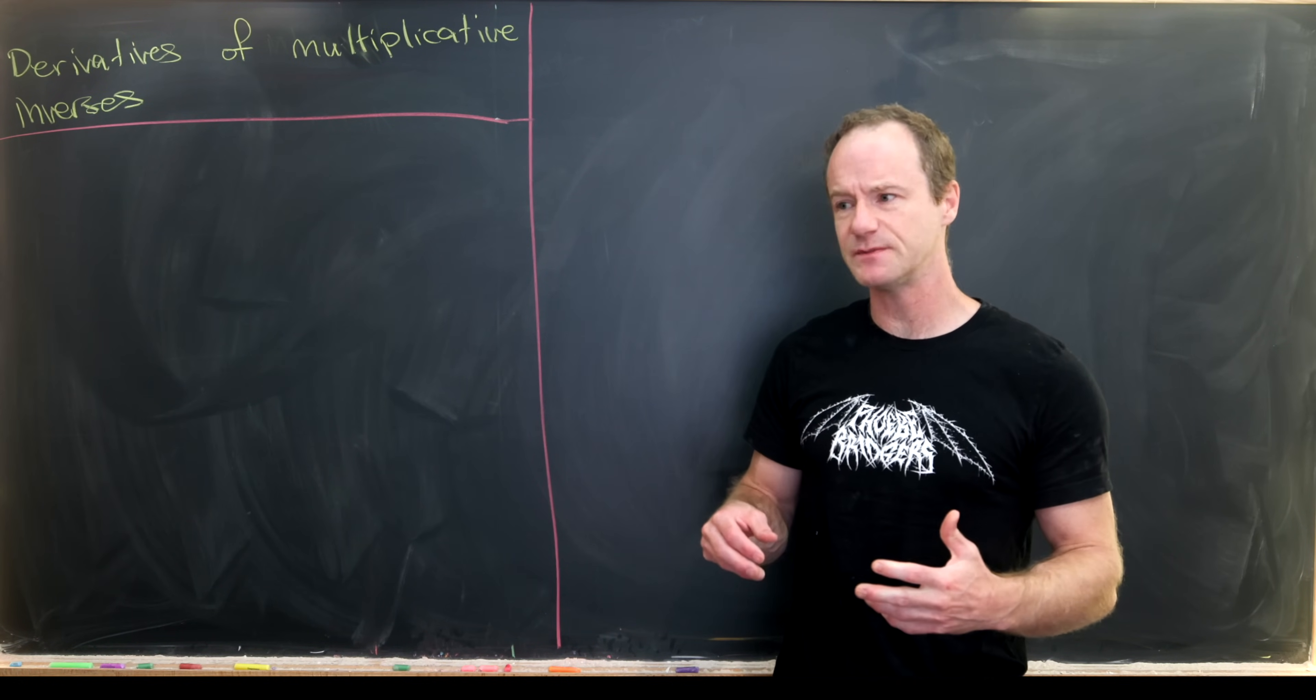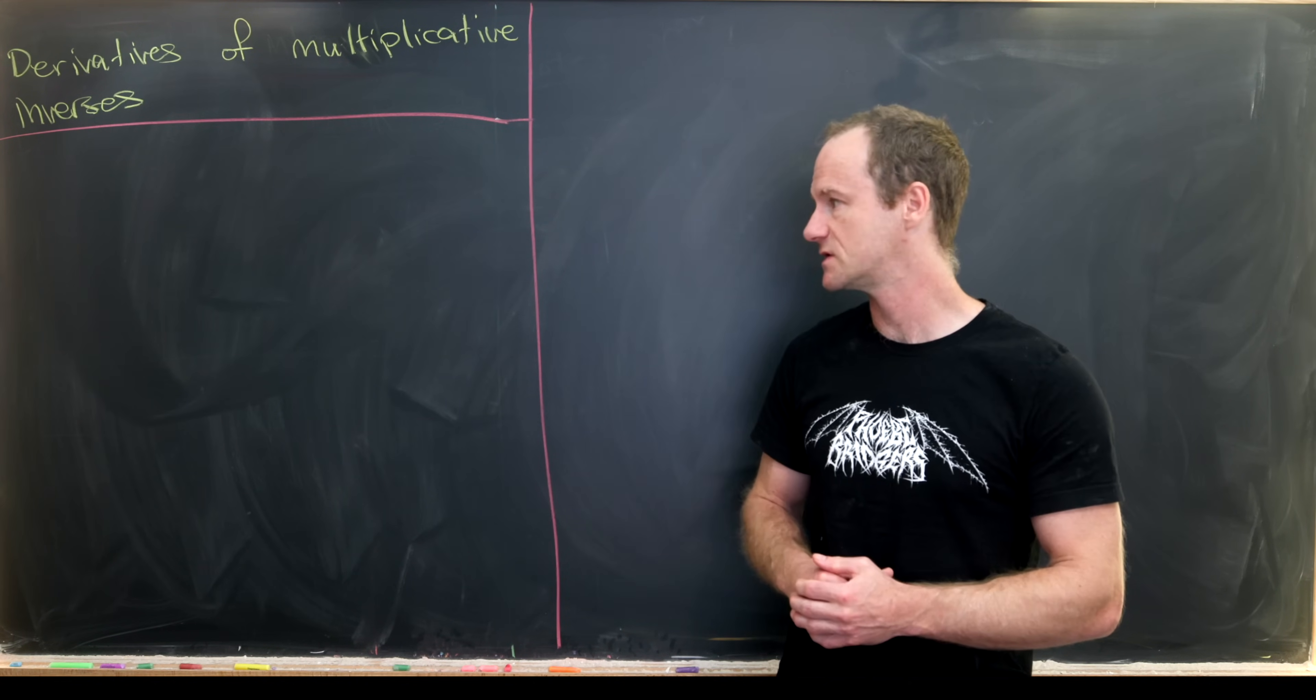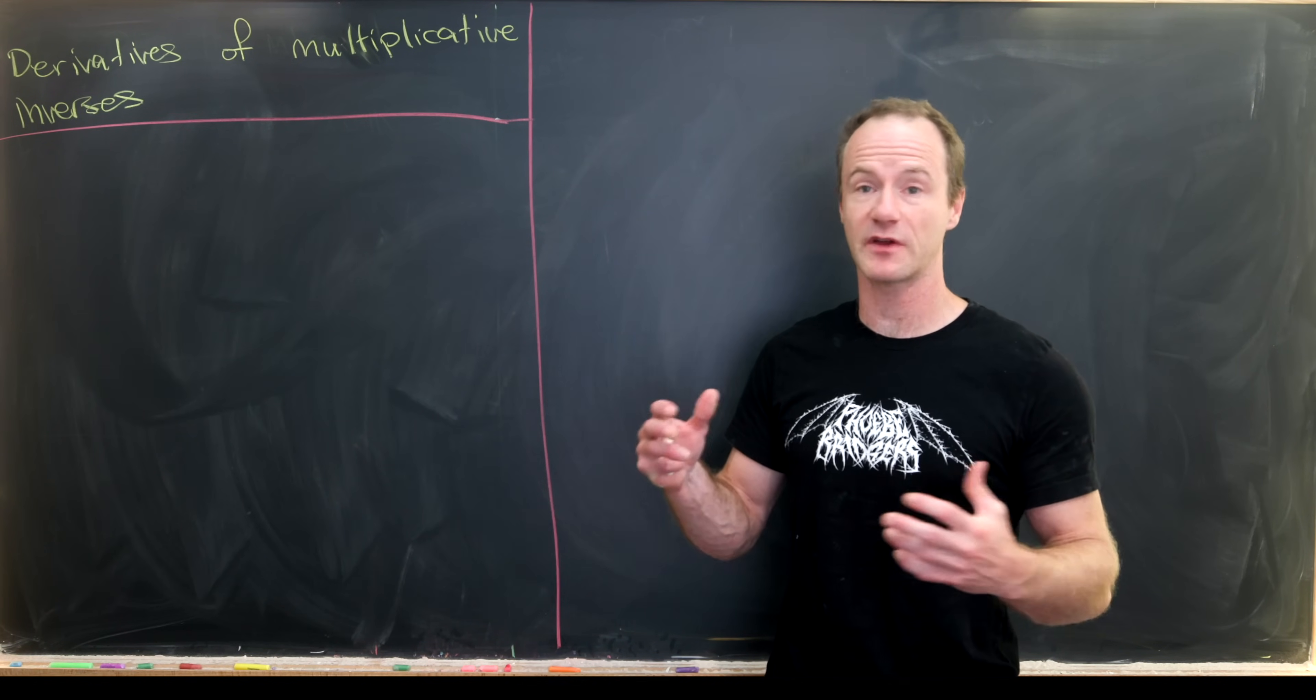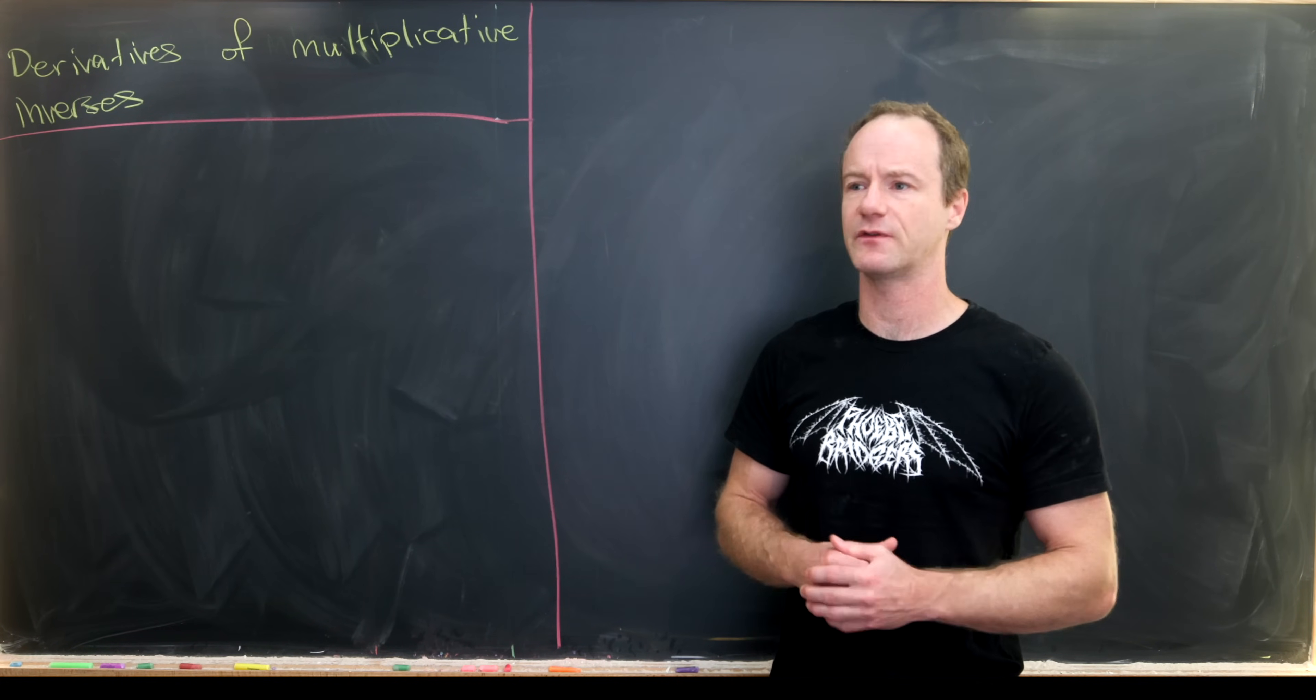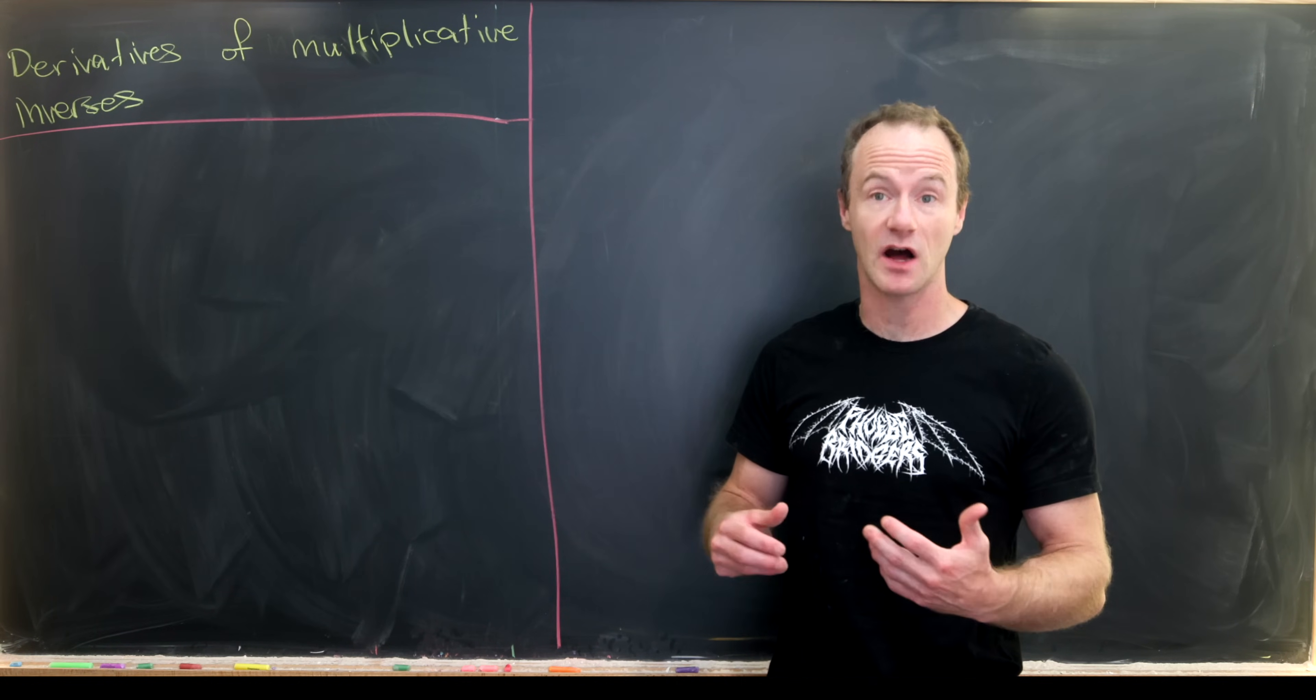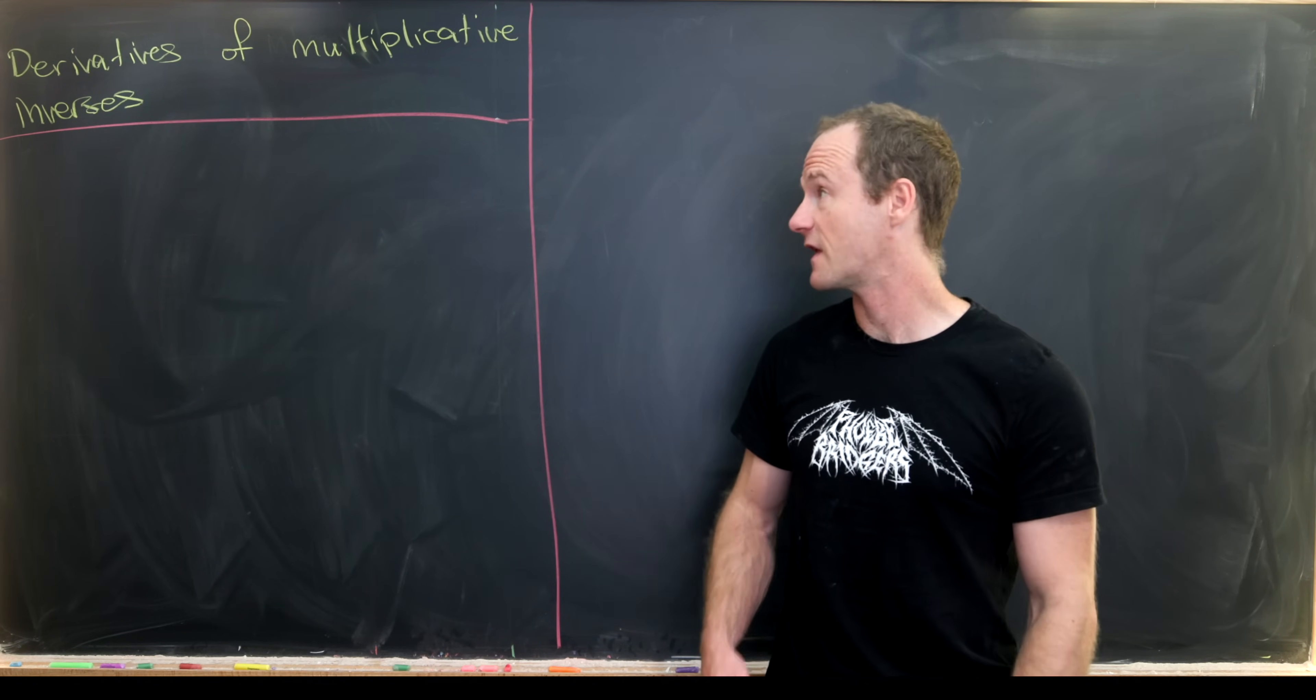This may not seem super interesting as it's a fairly easy derivative to take in general with real valued functions. But what if we're in some sort of arithmetic system where we do not have commutativity of multiplication? That could occur with matrix valued functions or maybe quaternionic functions whose output are quaternions.